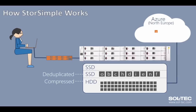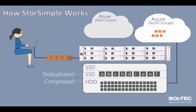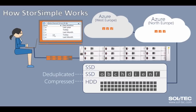Once in Azure, three copies of the data are made locally and another three copies are geo-replicated within the region. The user has the standard Explorer window to access the data — there are no additional archiving flags needed to go back to data from the previous year. The user simply opens the file, StorSimple retrieves and rehydrates it, and then presents that document to the desktop.